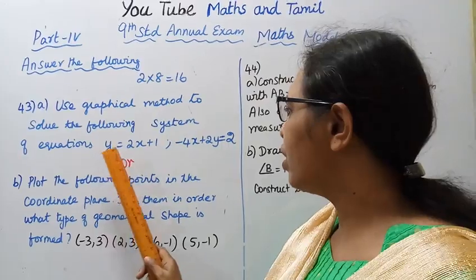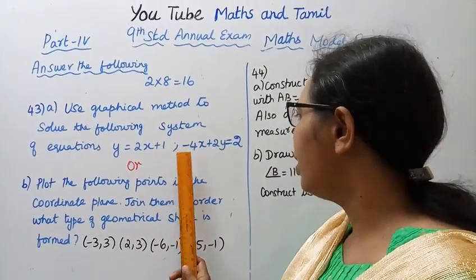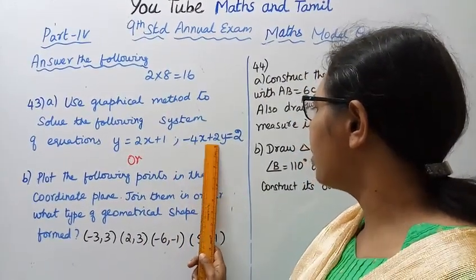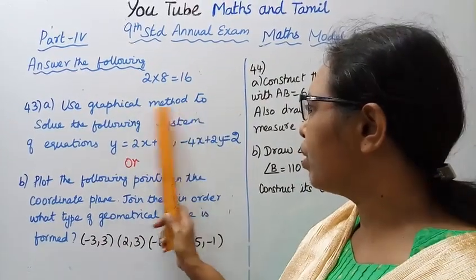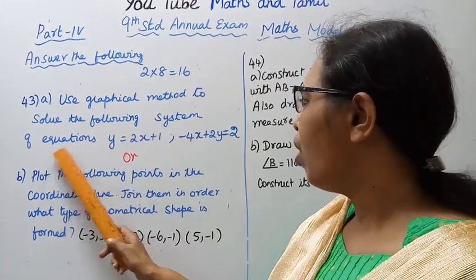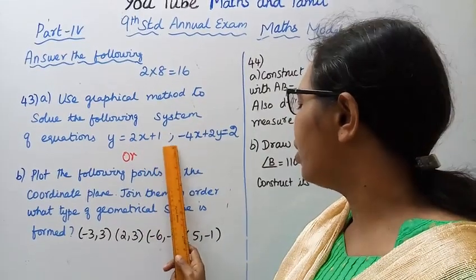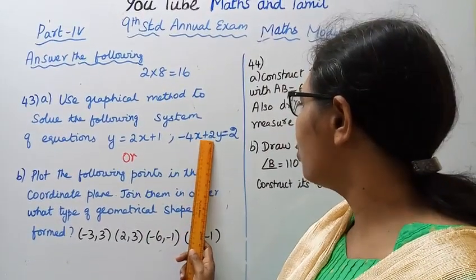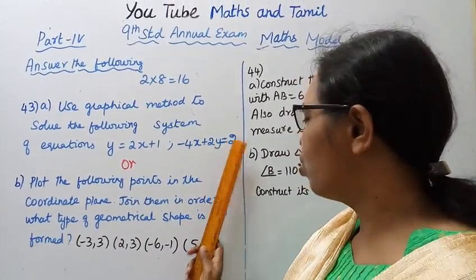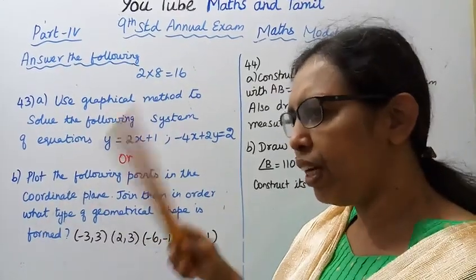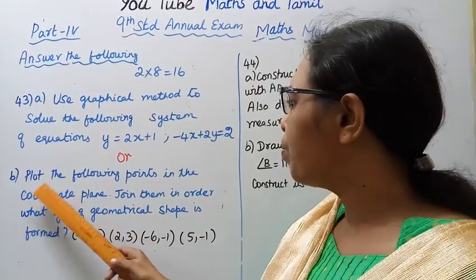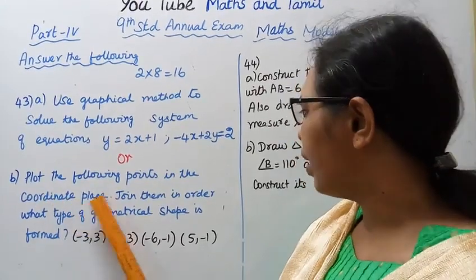Question 43a: Use graphical method to solve the following system of equations. y equals 2x plus 1. Minus 4x plus 2y equals 2. Use graphical method to solve the following system of equations.